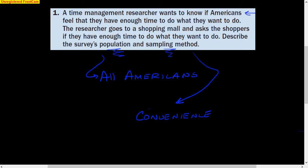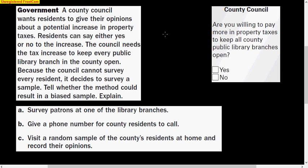A county council wants residents to give their opinions about a potential increase in property taxes. Residents can say either yes or no to the increase. The council needs the tax increase to keep every public library branch in the county open. So we want to know whether each one of these would be a biased sample or unbiased. The first one is survey patrons at one of the library branches. If you're surveying about keeping the library open and you're just going to go to the library, don't you think those people would want to keep the library open? This is definitely a biased way of taking a sample.